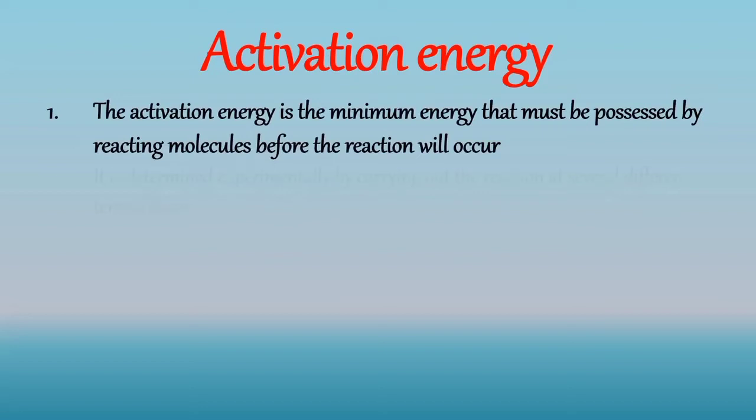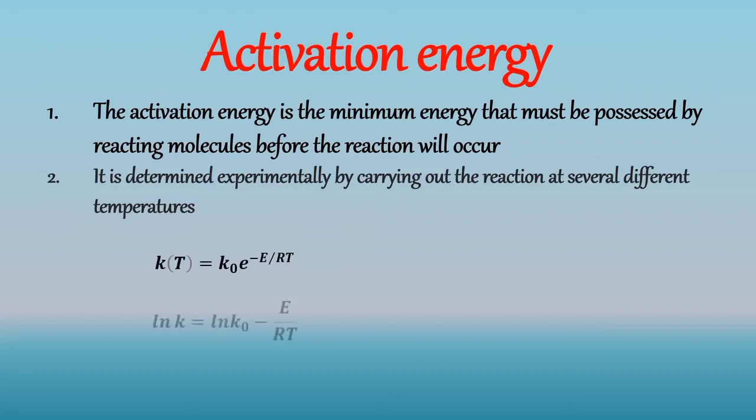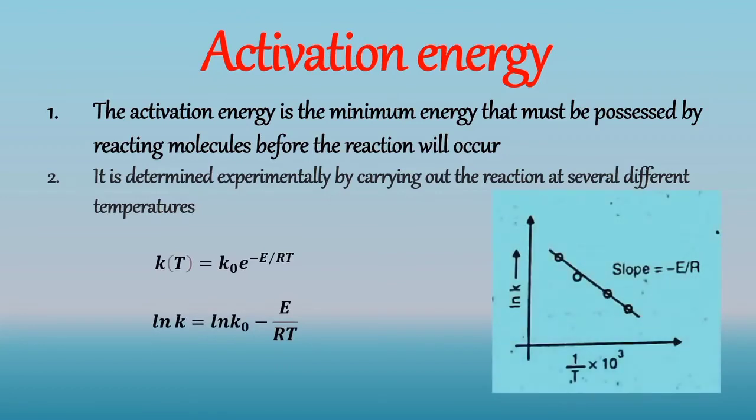So the activation energy is determined experimentally by carrying out the reaction at several different temperatures. As we know Arrhenius equation, from this equation we can determine the activation energy. So by taking the natural logarithm of the equation we get, if we plot the semilog graph between ln K and 1 by T, we get a straight line with a slope equal to minus E by R. So to calculate activation energy, we should have data of reaction rate constant as a function of temperature. So this is graphical method.